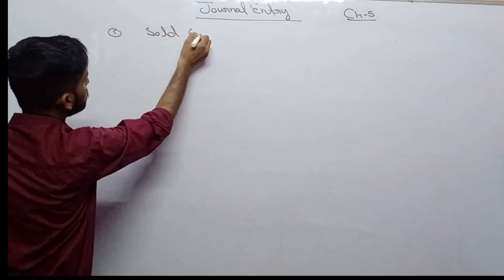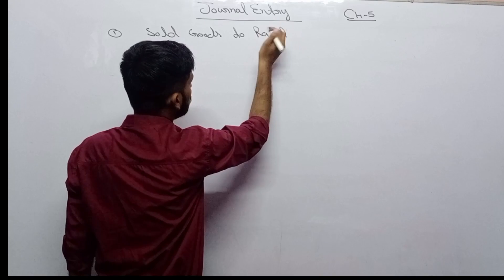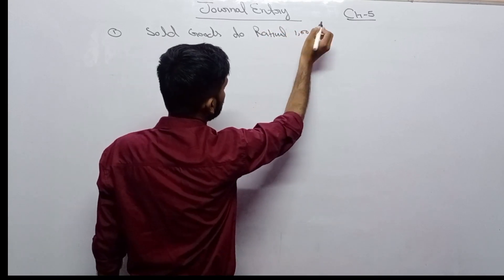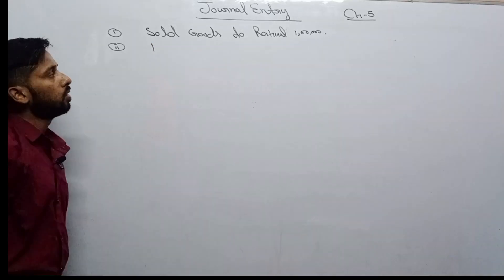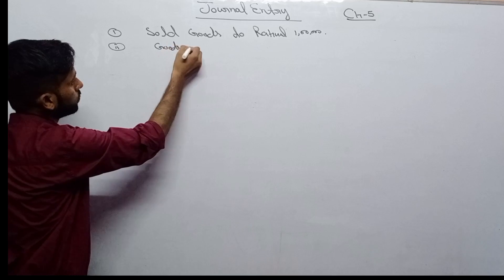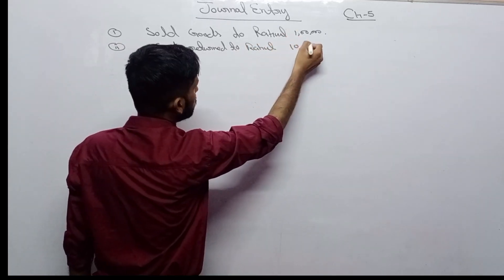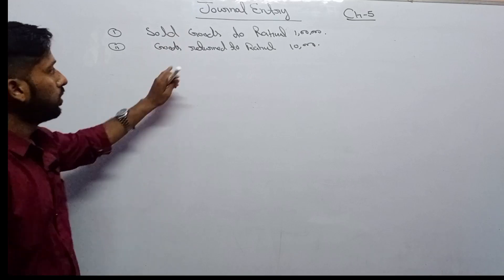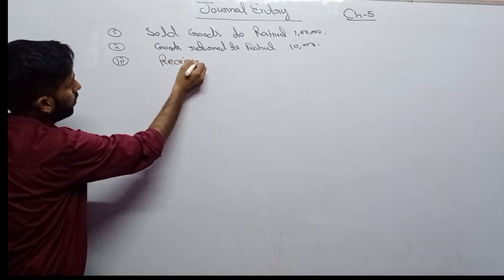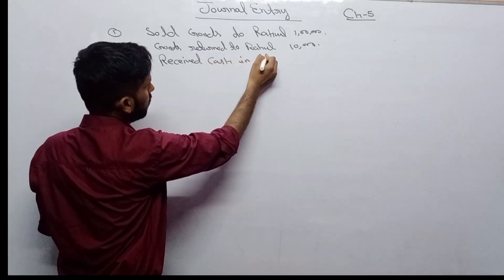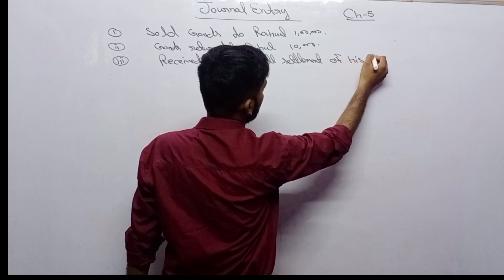Now see the next set of questions. Sold goods to Rahul: 1,00,000. Number two: goods return from Rahul, 10,000. Number three: received cash in full settlement of his account, 85,000.